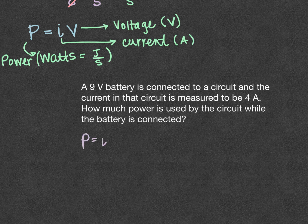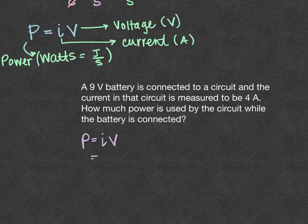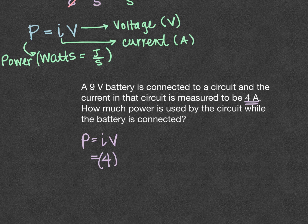And P equals IV. And so we've got a current of 4 amps, and we're going to multiply it by this 9 volt battery.